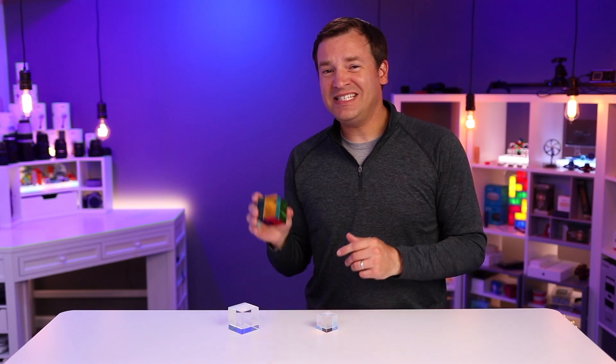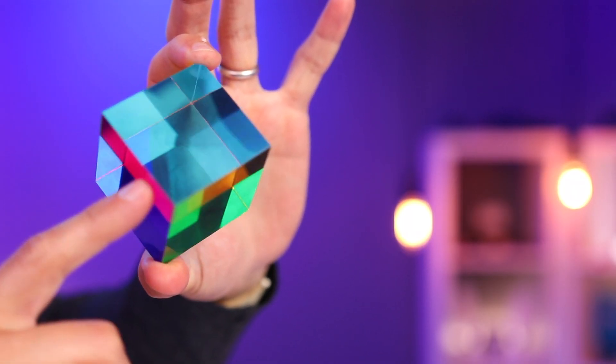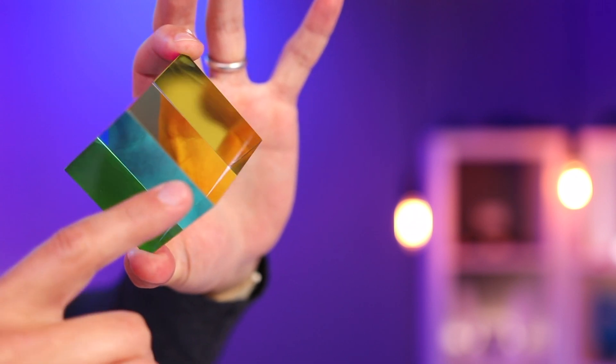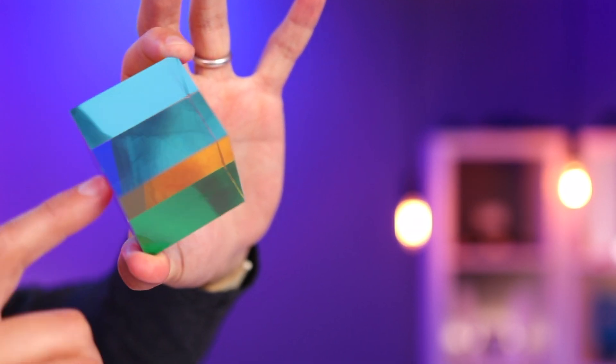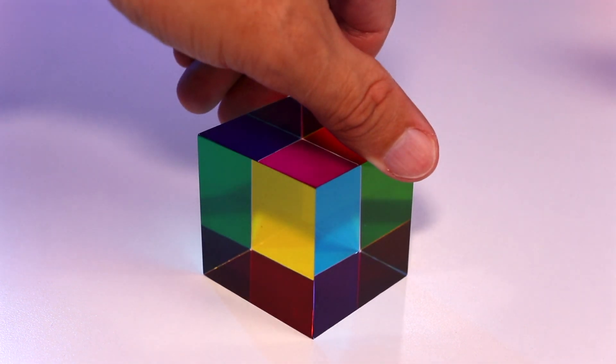And then there's something called the CMY cube. These are pretty popular as well, and they have different color coatings on them of cyan, magenta, and yellow. And that's going to allow these colors to mix and give you different combinations as you play with it. It is pretty mesmerizing.